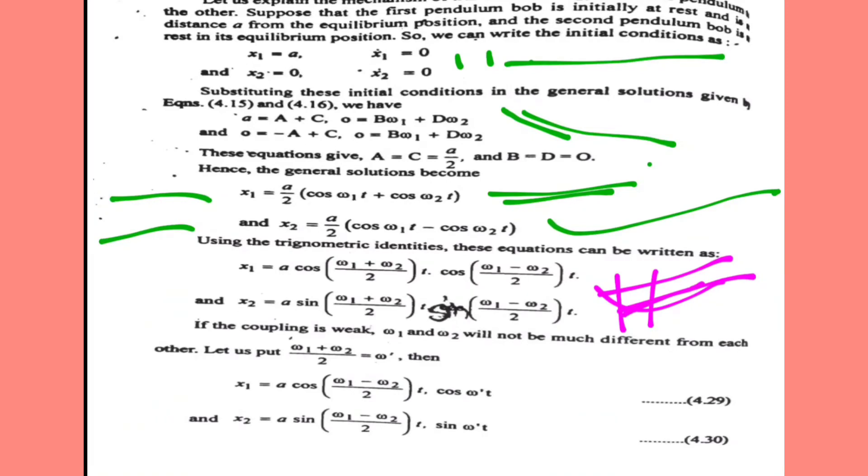If the coupling is weak, then omega1 and omega2 will not be much different from each other. Let us substitute (omega1 + omega2)/2 = omega_dash. Hence the above equations become: x1 = a * cos((omega1 - omega2)/2 * t) * cos(omega_dash * t) and x2 = a * sin((omega1 - omega2)/2 * t) * sin(omega_dash * t).